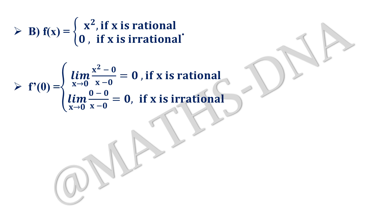So f'(0) if x is rational, then it will be limit x tends to 0, x square minus 0 upon x minus 0. x gets cancelled out from numerator and denominator and at x equals 0, it will be 0. And if it is irrational, it is already given to us that it will be 0. So 0 minus 0 will again be 0. So at both the points, we get f'(0) equals 0.